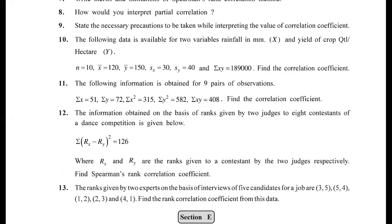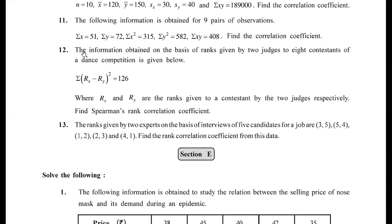Section D has two sums. Sum 12: information based on ranks given by two judges to 8 contestants of a dance competition, where Σ(Rx−Ry)² = 126. Note that Rx − Ry is D, so this is Σd². With n = 8 and Σd² = 126, just replace values in the first formula to get your answer.